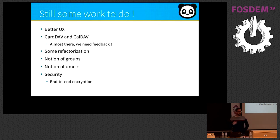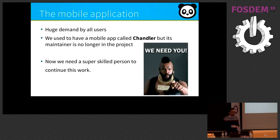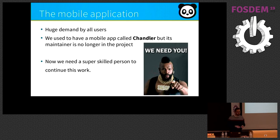Recently we implemented CardDAV and CalDAV. We need your feedback on this because we're not sure it works well yet. We want to add the notion of groups and a 'me' card, and we also want to improve security because it's very important — we don't want to leak data. Regarding the mobile application: we know there is huge demand. Today we do not have one. We started creating an app called Chandler, but its maintainer is no longer in the process. So we need you — if you're interested in developing the mobile app, please contact us.